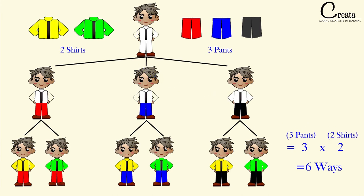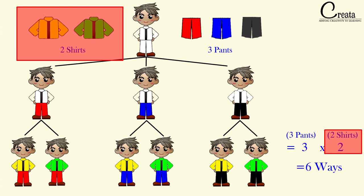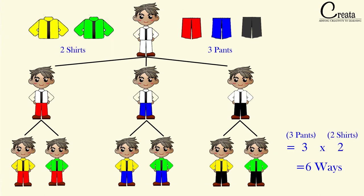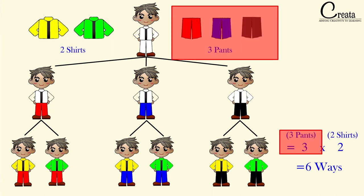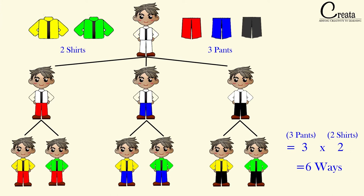This is the technique: if we multiply the first choice with the second choice, or we can say we multiply the first event with the second event, we get the total number of ways in which the combinations can be formed. This is a basic schematic chart diagram which we can use for a small number of items.